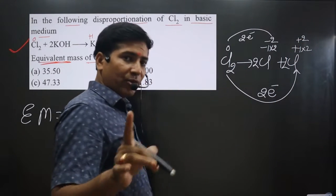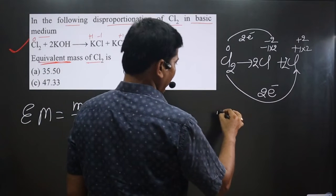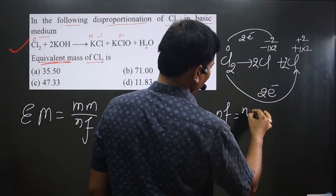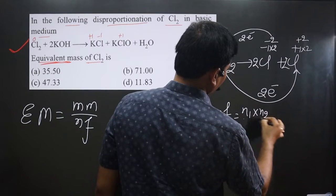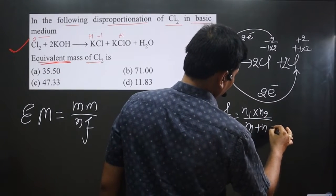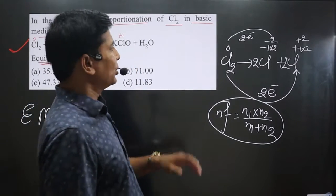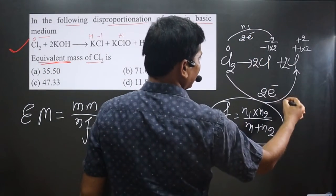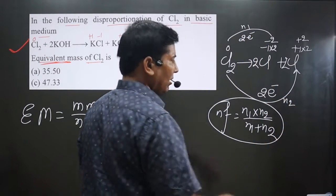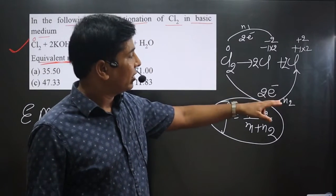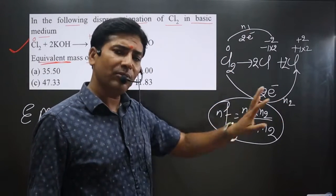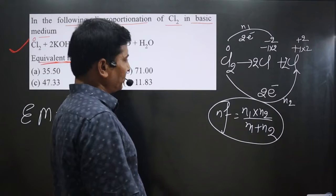How we calculate N factor value in disproportionate redox reaction? N factor is equal to N1 multiplied by N2 divided by N1 plus N2. Remember this formula, very important formula we have. So I assume it is N1 and it is N2. You can crisscross, you can switch also. It is not going to change the value.